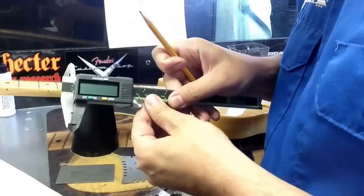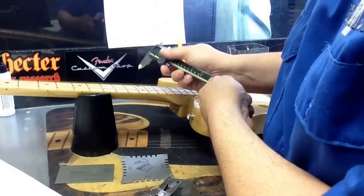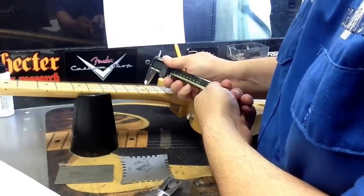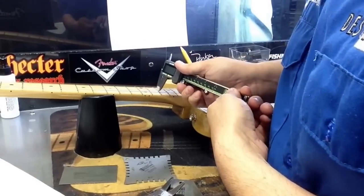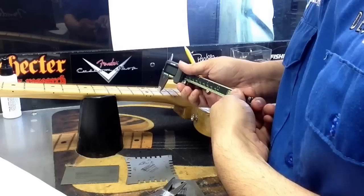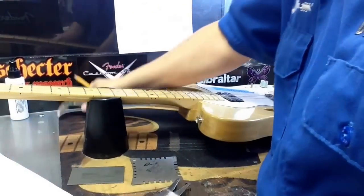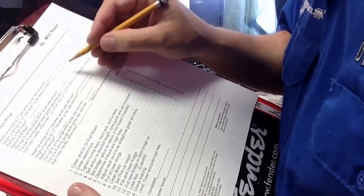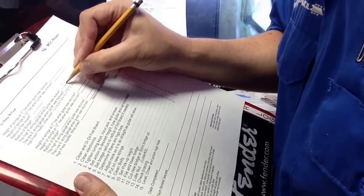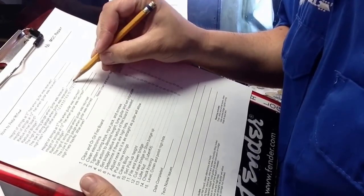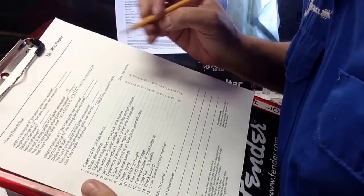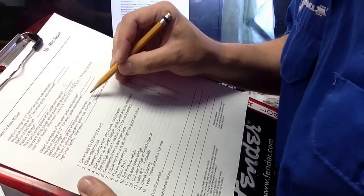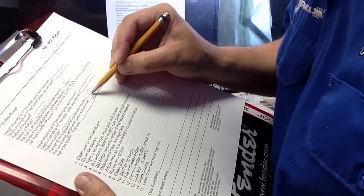We'll use a caliper to measure his strings. Basically, we're learning these strings are 9 to 42, so we'll note on the sheet the gauge of strings received on the guitar is 9 to 42. He wants something a little larger, so the strings we're going to give back to him are 10 to 46.